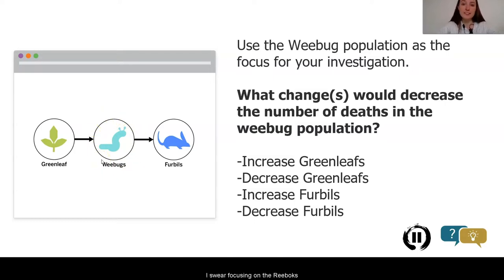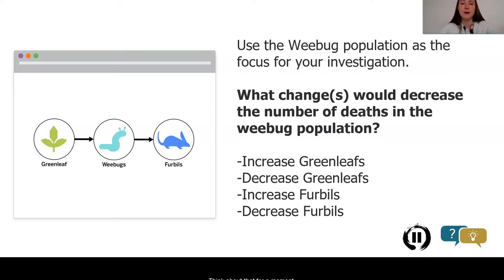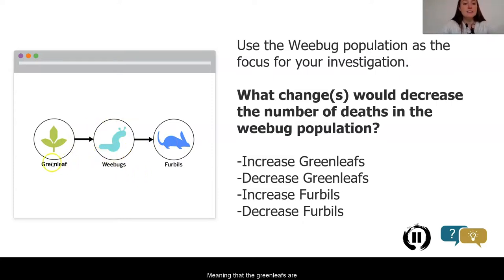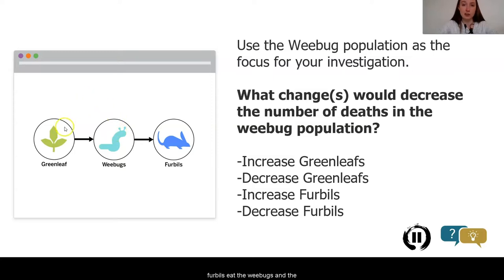What you're going to do today is focus your investigations on our WeBug population. As we're focusing on the WeBugs, I want you to pause the video and find a person to check in with, or maybe a friend you can text or message. Ask yourself: what is the consumer and the resource population for the WeBugs? From our food web, we can see that the Greenleafs are the resource population for the WeBugs, and the Furballs are the consumer population of the WeBugs. The Furballs eat the WeBugs and the WeBugs eat the Greenleafs.